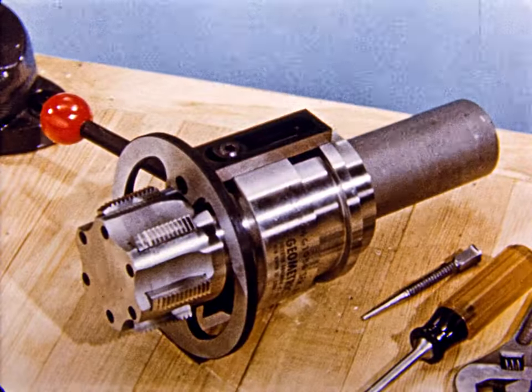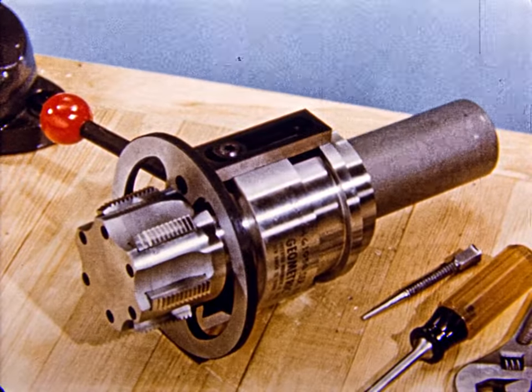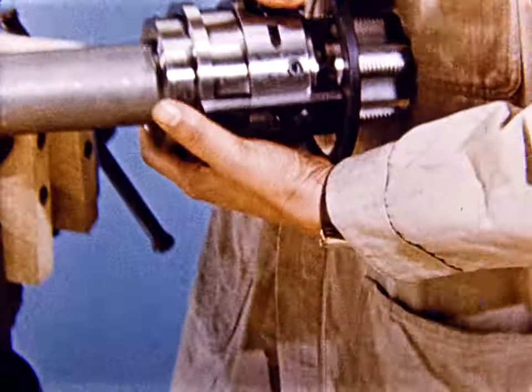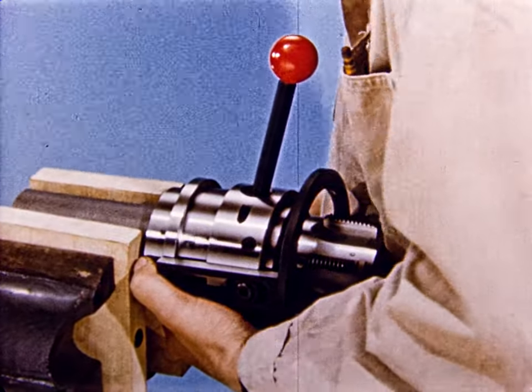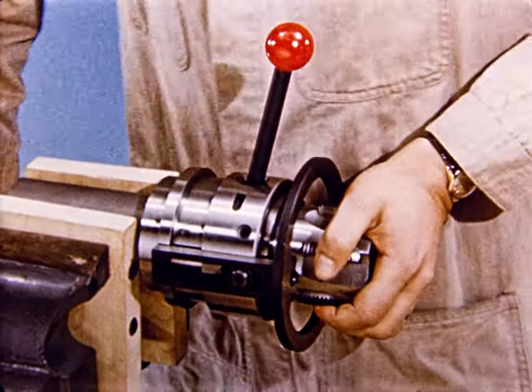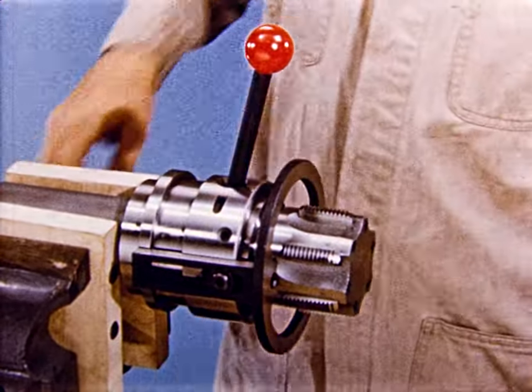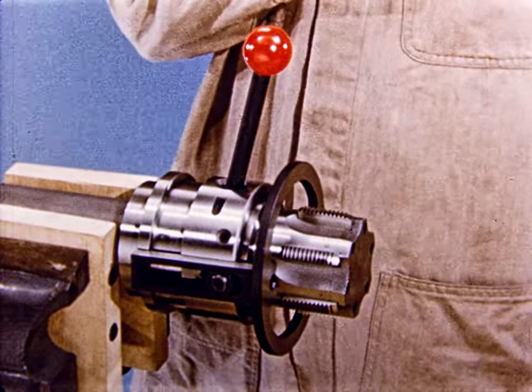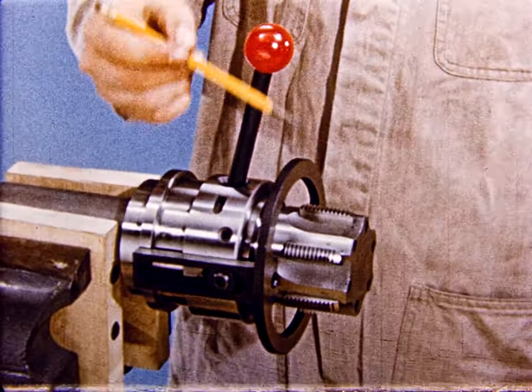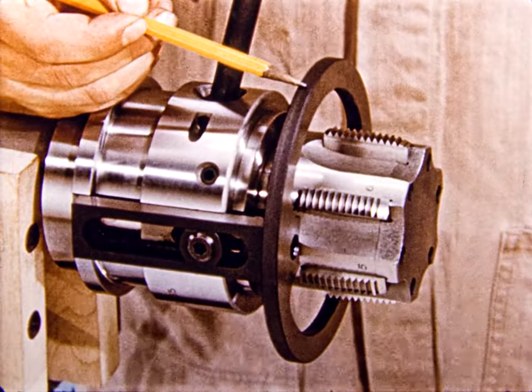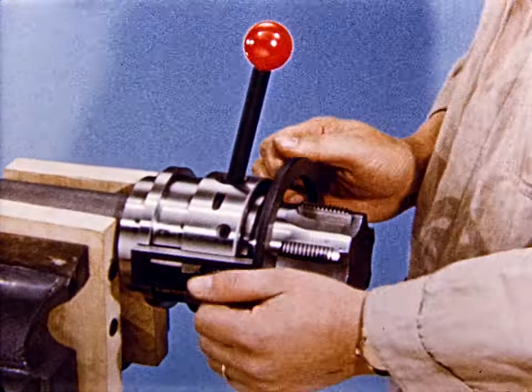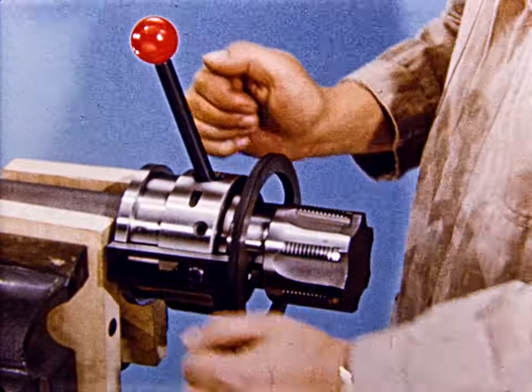To satisfy every known machine requirement, geometric has made the class S collapsing tap truly a universal tool. Four easily interchangeable trips enable this tap to be used on a variety of machines. This is a stationary type class S tap with a trip plate. It is designed for use on hand screw machines and turret lathes. It is collapsed by the trip plate and reset by the closing handle.